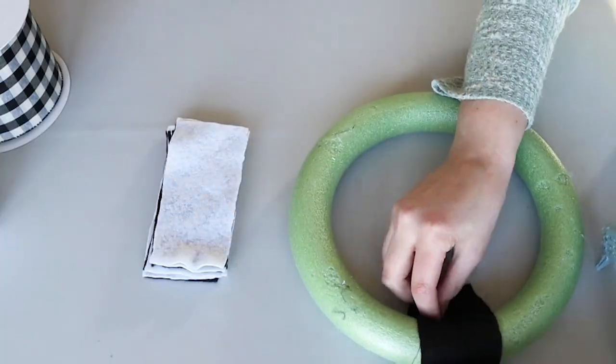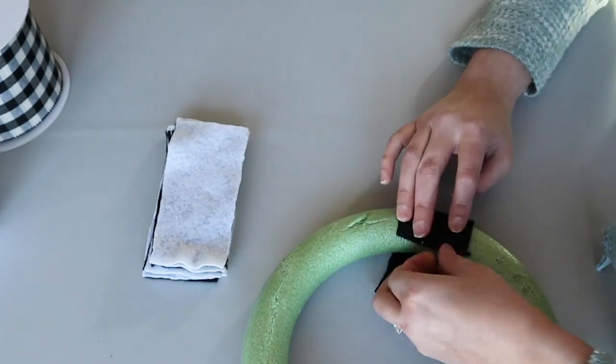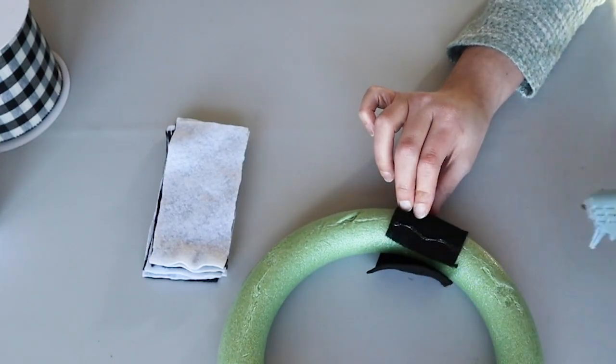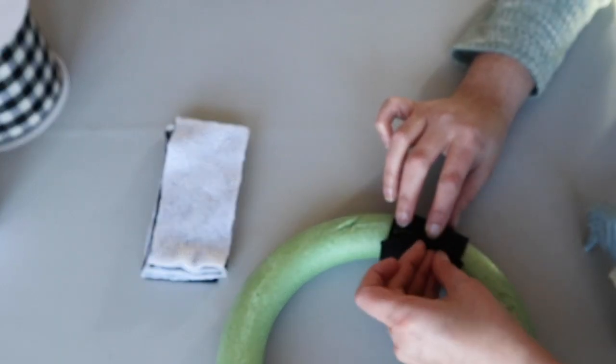I used a little hot glue to secure the felt strips onto the back of the floral ring. I overlapped them slightly and angled them to make sure they looked consistent going all the way around.